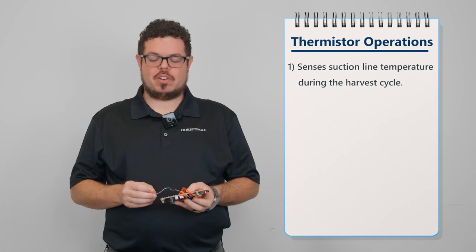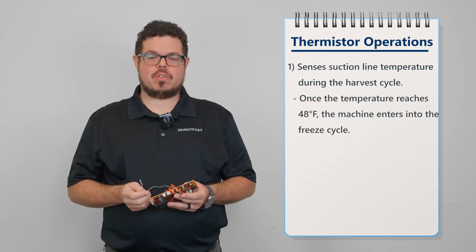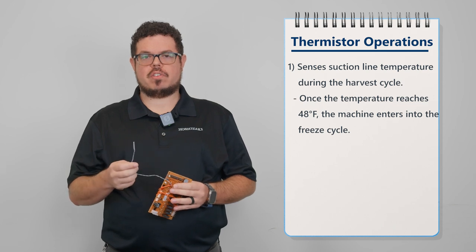First, let's go over the operation of the KM Thermistor. This thermistor is looking for a 48 degree suction line temperature coming back to the control board. This is what takes it out of a harvest and into a freeze cycle.